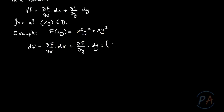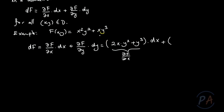The partial derivative of f with respect to x is 2x y² + y³, so we get (2x y² + y³) dx. The partial derivative of f with respect to y is 2x² y + 3x y², so we get (2x² y + 3x y²) dy.